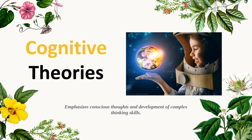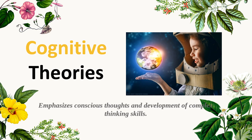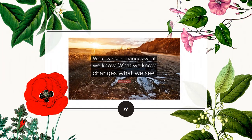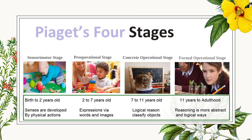Cognitive theory emphasizes conscious self and the development of critical, complex thinking. What we see changes what we know, and what we know changes what we know. Jean Piaget had four stages: the sensorimotor stage from birth to two years old, the pre-operational stage from two to seven, the concrete operational stage from seven to eleven, and the formal operational stage from eleven years to adulthood.